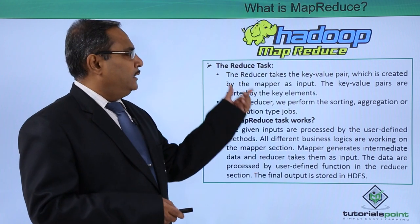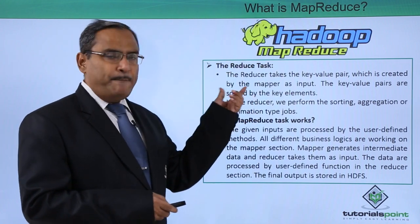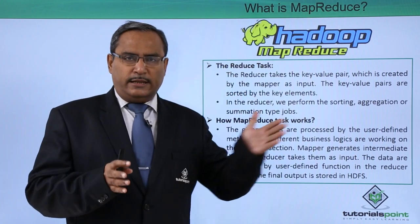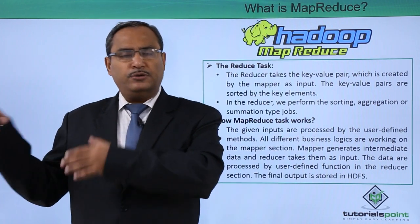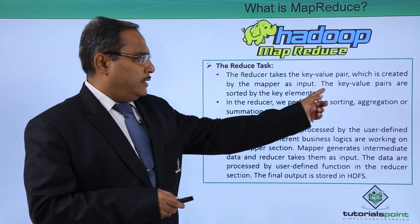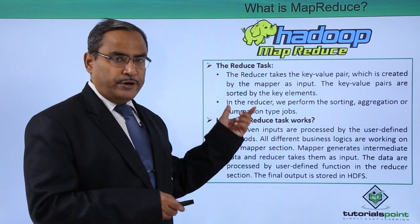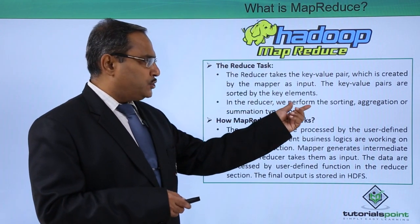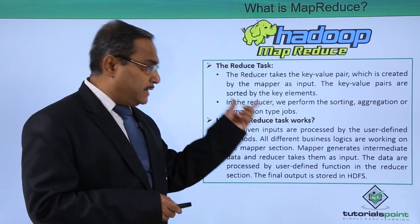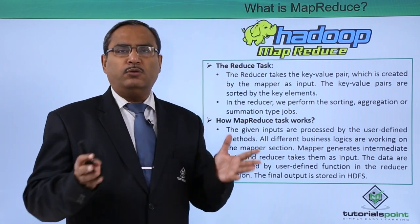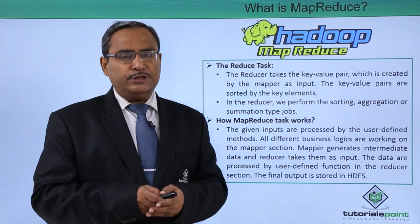Now we move to the reduce task. The reducer takes the key-value pair created by the mapper as input — the mapper's output becomes the input to the reducer, and the reducer produces the respective output. The key-value pairs are sorted by the key element in the reducer. In the reducer we perform sorting, aggregation, or summarization jobs — such as summation, counting, maximum/minimum calculations, and so on.